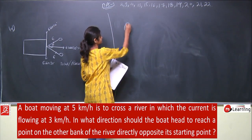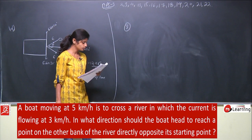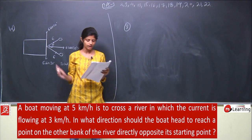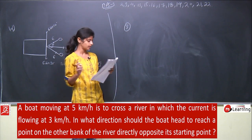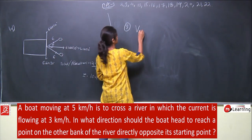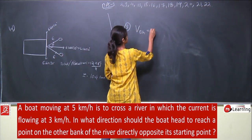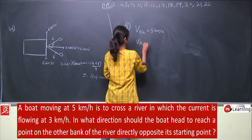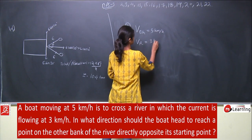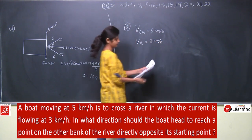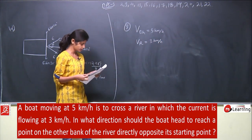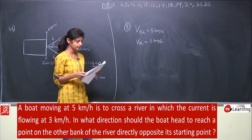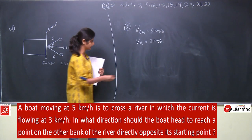Next is question number 3. A boat moving at 5 km/h is to cross a river in which the current is flowing at 3 km/h. In what direction should the boat head to reach a point on the other bank directly opposite its starting point?